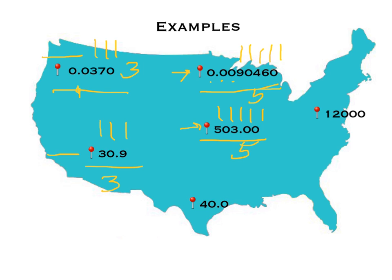For 40.0: is the decimal present? Yes. So we count the 4, the 0, and the last 0, giving us three sig figs. For 12,000: is the decimal present? No — there is an understood decimal, so we start on the Atlantic side, go across the number looking for the first non-zero. We have three zeros, and a 2 and a 1, so there are two sig figs. When you don't have a decimal, it doesn't matter how many zeros you have — they are not going to be significant.